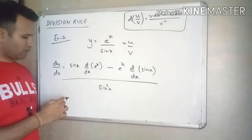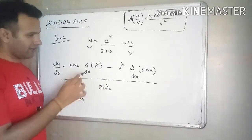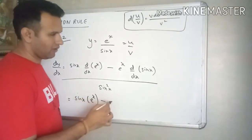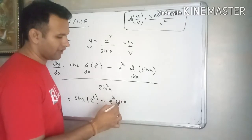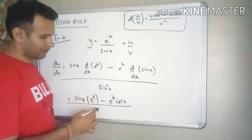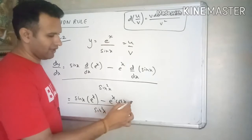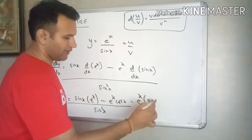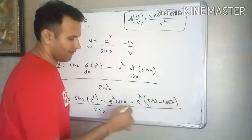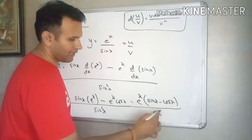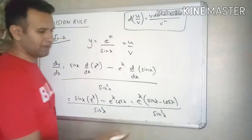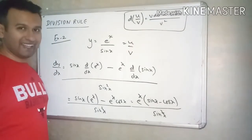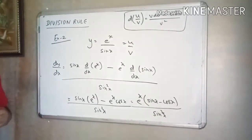Continuing example 2: sin x times derivative of e raised to x, minus e raised to x times derivative of sin x, all divided by sin square x. Derivative of e raised to x is e raised to x, and derivative of sin x is cos x. So the answer is e raised to x times sin x minus e raised to x times cos x, divided by sin square x. Taking e raised to x common, we get e raised to x times open bracket sin x minus cos x close bracket, divided by sin square x. Nothing cancels here — this is the final answer.